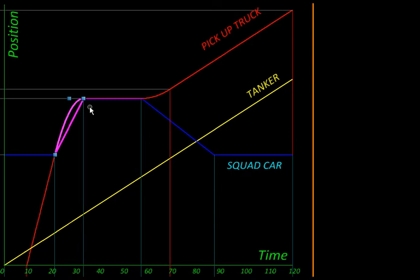That means the two met. What happened next? Both graphs became horizontal. So both the vehicles stopped.